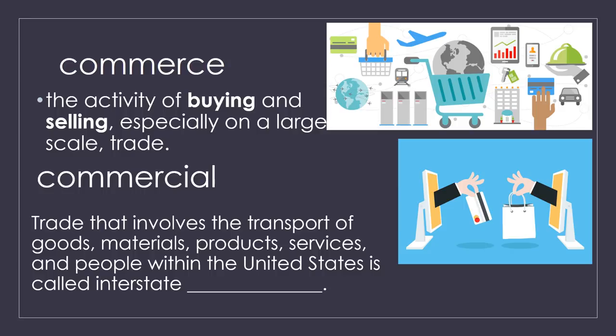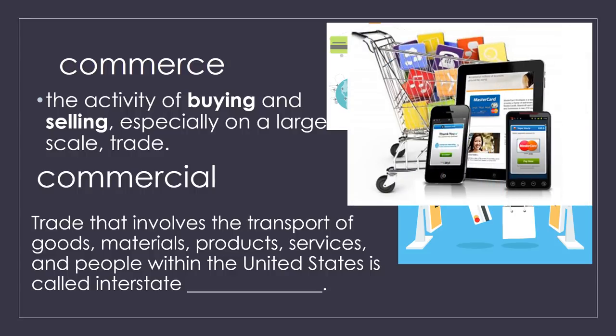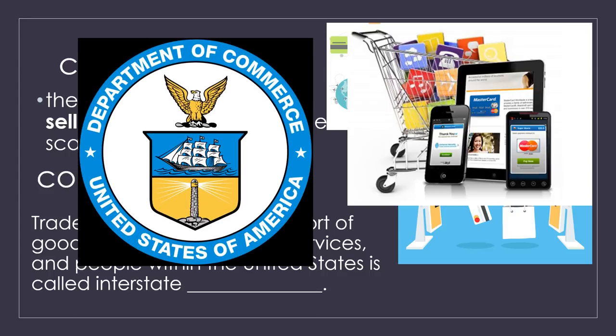Trade that involves the transport of goods, materials, products and services and people within the United States is called interstate commerce. Nowadays with the internet and all of our technology, we perform a lot of commerce online. The government actually regulates, controls, and monitors how people do business to make sure nobody is doing anything illegal or cheating customers out of a good product or service.